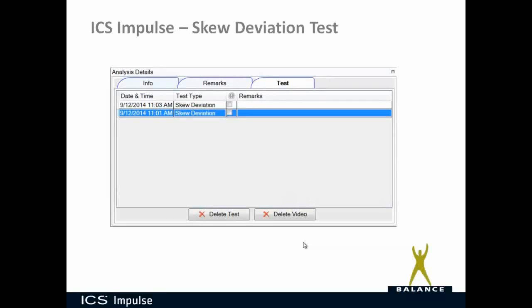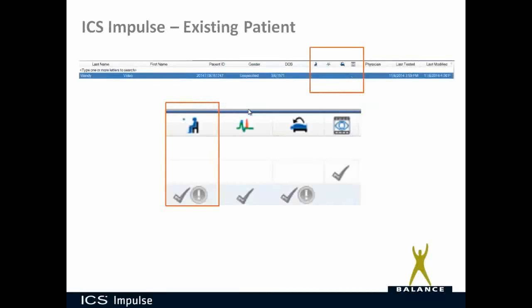If you go to the Test tab, you would have a list of all your tests — every time you did a skew deviation test it would be listed there. You can also go into the Remarks tab to add remarks about what was unique about that test. If you have an existing patient, the skew deviation test is under Ocular Motor, denoted by the icon of a person in a chair staring at a dot. Next to the patient's name in that column, there would be a check mark indicating an ocular motor test was done.